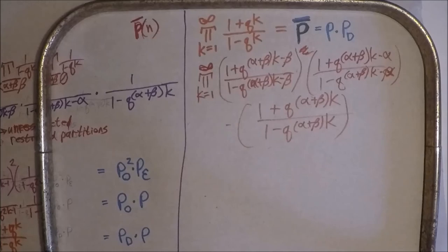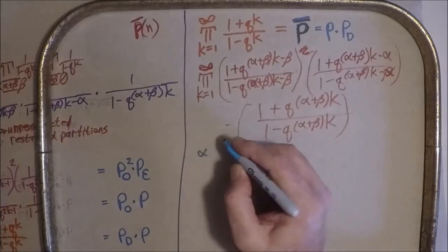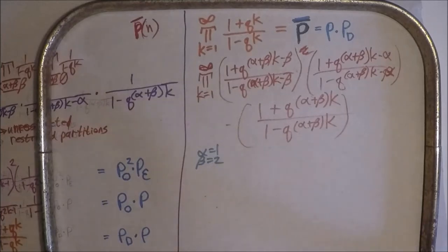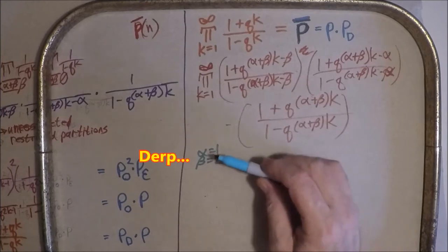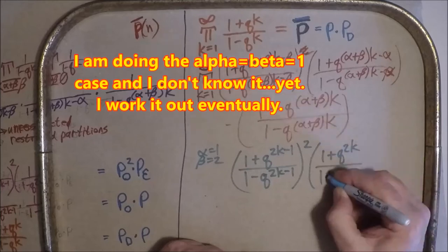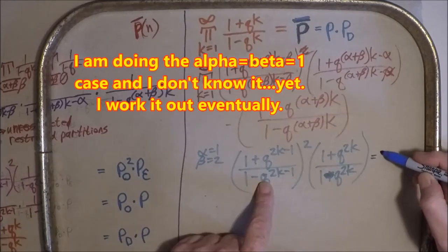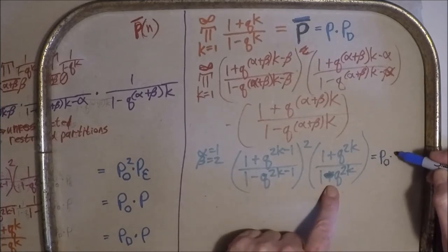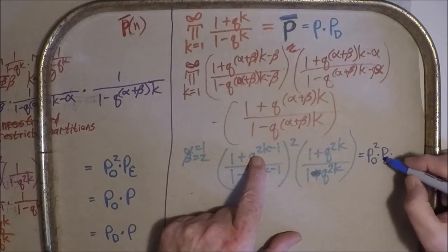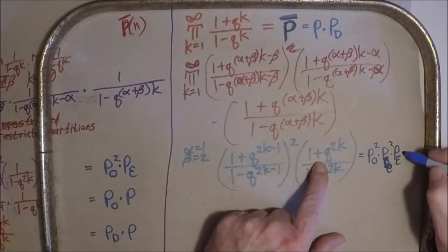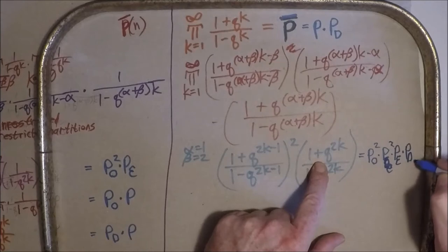When we look at what happens when alpha equals one, beta equals two, that should be our base case of over partitions. And so essentially, so we've got, well, we're going to call that P O and this one, and that's P O squared. That's P D E squared. That's P E. And that's P D E.